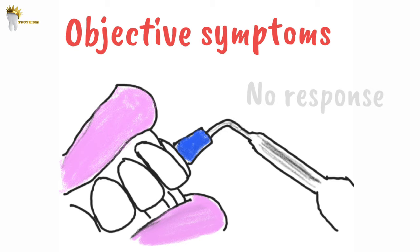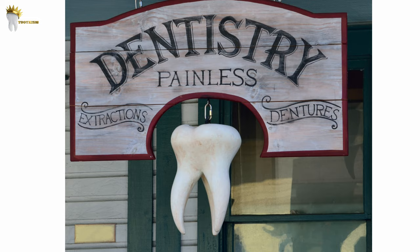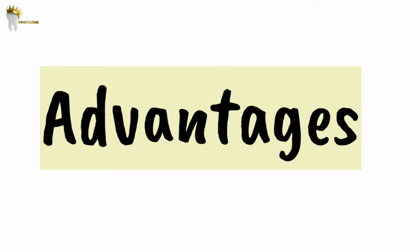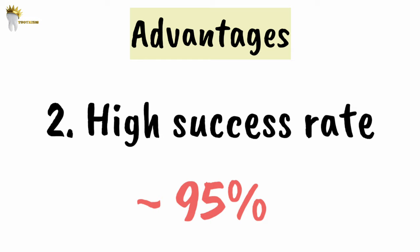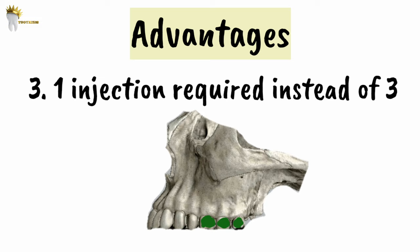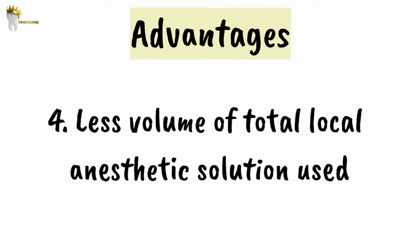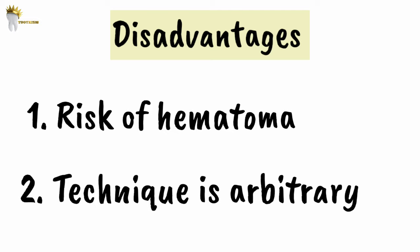This nerve block has several advantages: it is atraumatic since we do not contact bone, the patient experiences no pain, and it has a 95 percent success rate. It anesthetizes three teeth in one injection, reducing the amount of local anesthetic needed. The main disadvantage is the risk of hematoma. Additionally, the technique is somewhat arbitrary as there are no bony landmarks during insertion — unlike the inferior alveolar nerve block where bone contact confirms proper depth. That concludes the PSA nerve block.